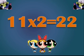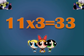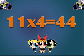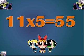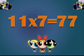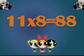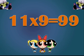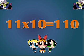11 twos are 22. 11 threes are 33. 11 fours are 44. 11 fives are 55. 11 sixes are 66. 11 sevens are 77. 11 eights are 88. 11 nines are 99. 11 tens are 110.